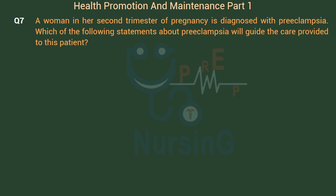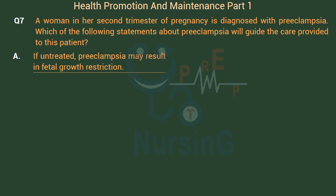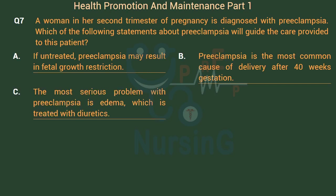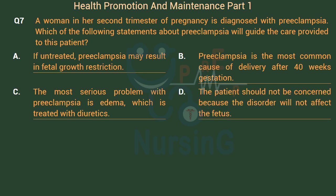A woman in her second trimester of pregnancy is diagnosed with preeclampsia. Which of the following statements about preeclampsia will guide the care provided to this patient? Option A: If untreated, preeclampsia may result in fetal growth restriction. Option B: Preeclampsia is the most common cause of delivery after 40 weeks gestation. Option C: The most serious problem with preeclampsia is edema, which is treated with diuretics. Option D: The patient should not be concerned because the disorder will not affect the fetus.